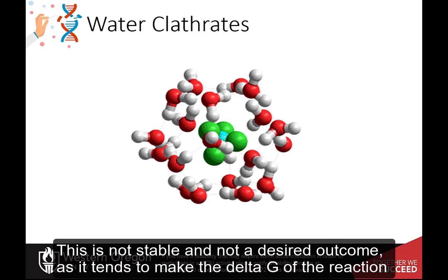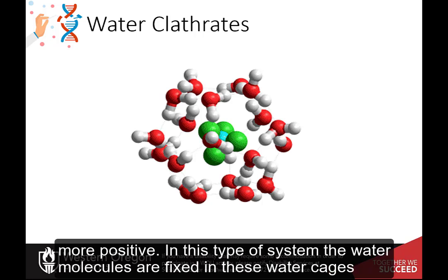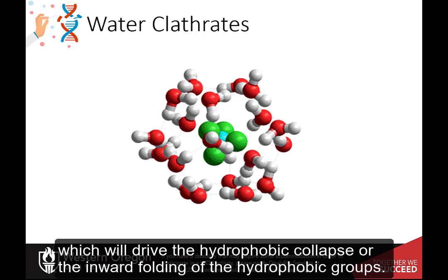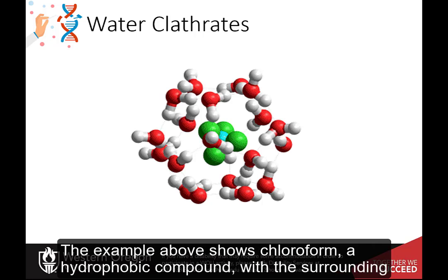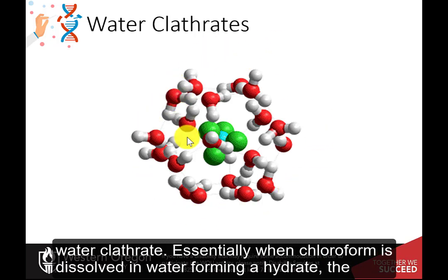This is not stable and not a desired outcome, as it tends to make the delta G of the reaction more positive. In this type of system, the water molecules are fixed in these water cages, which will drive the hydrophobic collapse or the inward folding of the hydrophobic groups. The example above shows chloroform, a hydrophobic compound, with the surrounding water clathrate.